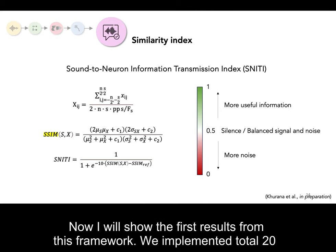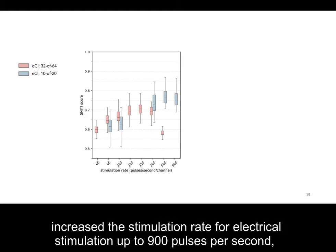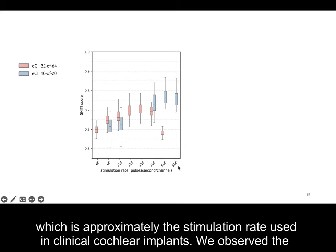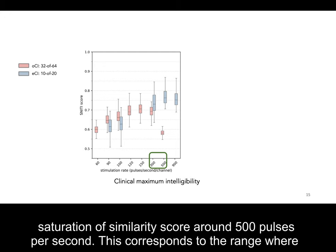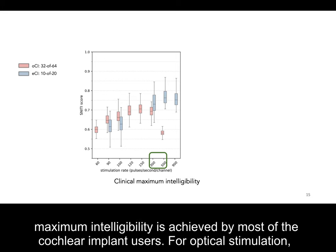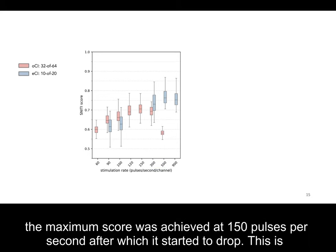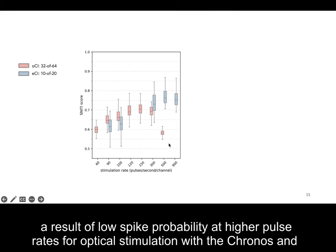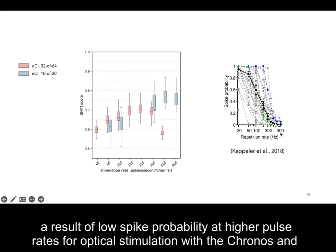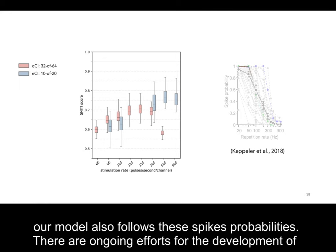Now I will show the first results from this framework. We implemented a total of 20 channels for electrical stimulation and 64 channels for optical stimulation. We increased the stimulation rate for electrical stimulation up to 900 pulses per second, approximately the rate used in clinical cochlear implants, and observed saturation of the similarity score around 500 pulses per second — corresponding to the range where maximum intelligibility is achieved by most cochlear implant users. For optical stimulation, the maximum score was achieved at 150 pulses per second, after which it dropped, due to low spike probability at higher pulse rates for optical stimulation with Chronos, which our model follows.